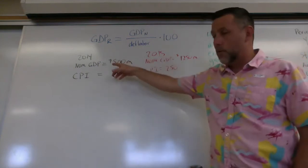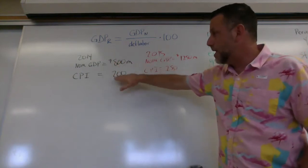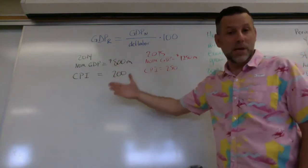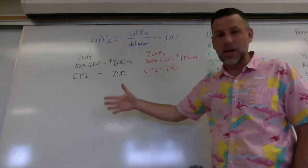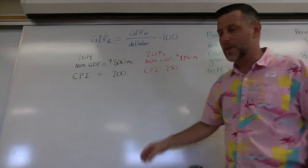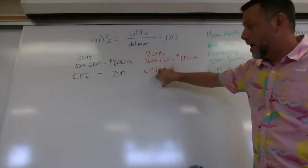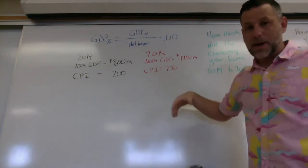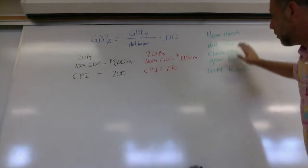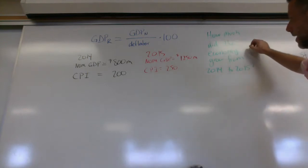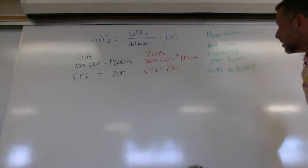So up here, I've got 2014. I've got a nominal GDP. I've got a CPI number. We can use that for the deflator. They're interchangeable as far as these equations go. 2015, I've got a nominal GDP. I've got a CPI number. I can use that for the deflator. And the question I have is, how much did the economy grow from 2014 to 2015?